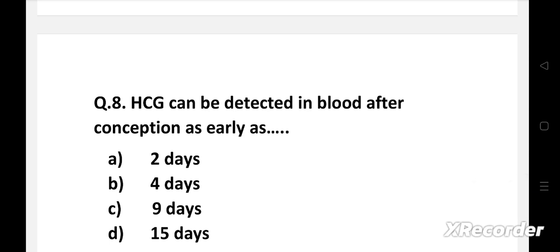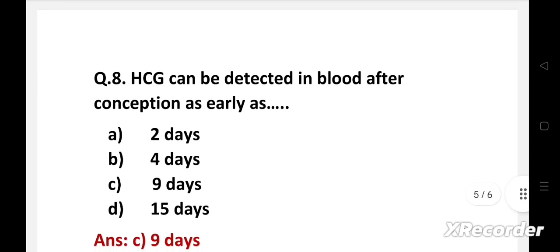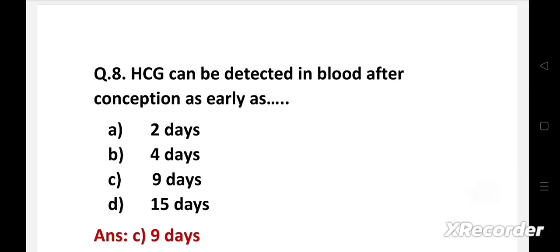Next question. HCG can be detected in blood after conception as early as: Option A: two days, B: four days, C: nine days, D: 15 days. Right answer is option C: nine days.